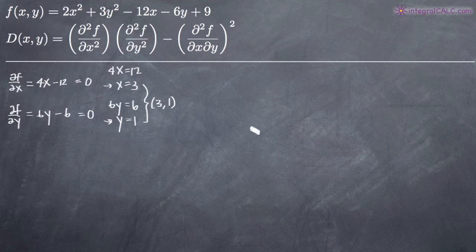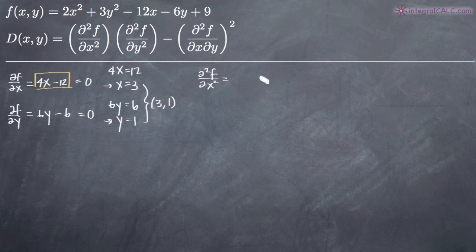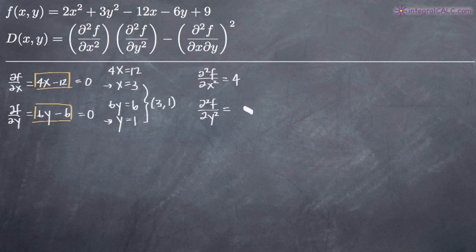We need both the second-order partial derivatives with respect to x and y, as well as the mixed second-order partial derivative. The second-order partial derivative of f with respect to x is found by taking the derivative of the first-order partial 4x minus 12 with respect to x again, giving us 4. The second-order partial derivative with respect to y is the derivative of 6y minus 6 with respect to y again, giving us 6.